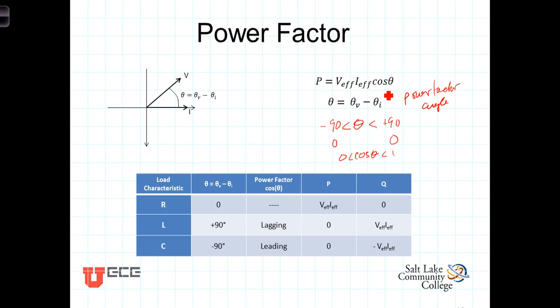Thus, this number becomes a multiplying factor, a value between zero and one, and that is referred to as the power factor. The cosine of theta is known as the power factor, it's a value between zero and one. The angle theta, which is theta V minus theta I, is the power factor angle.